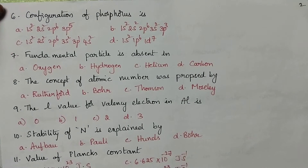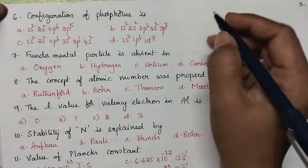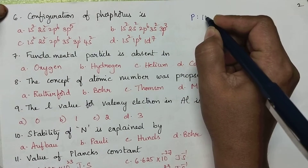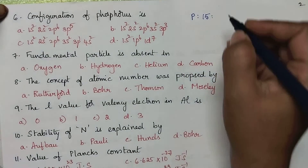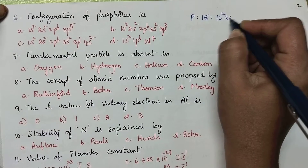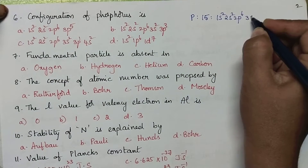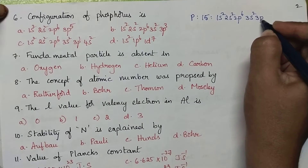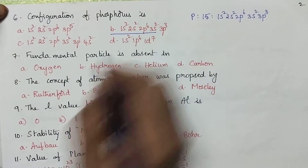The configuration of phosphorus: the atomic number of phosphorus is 15. Hence, its configuration is 1s2, 2s2, 2p6, 3s2 and 3p3. So, option B is the right answer.